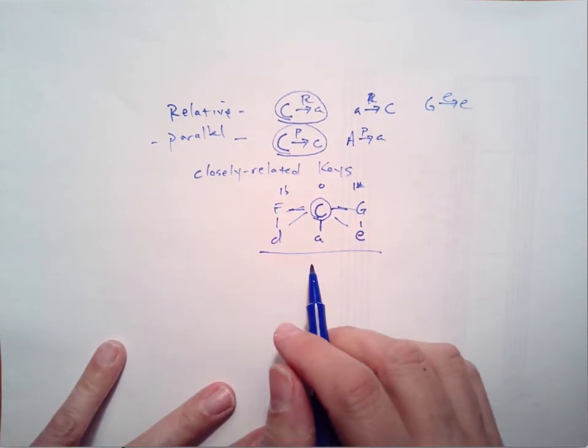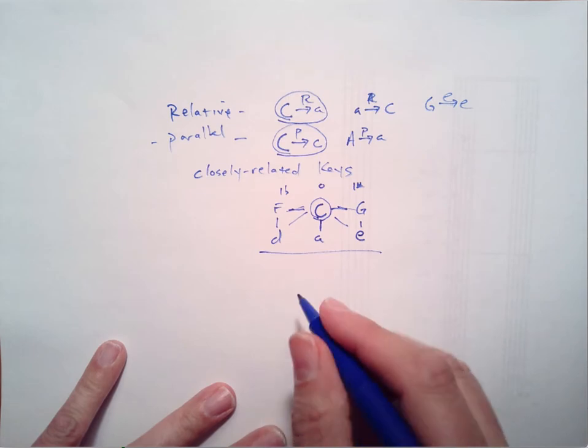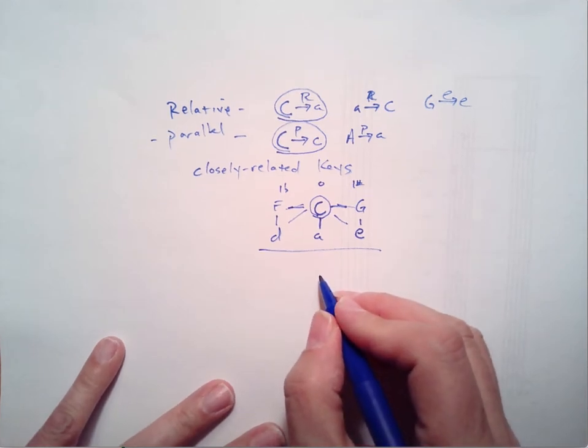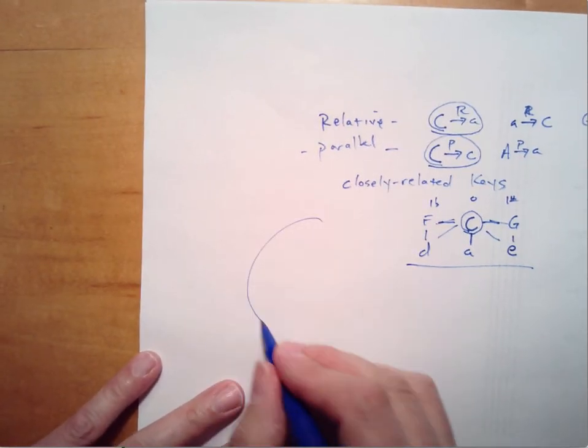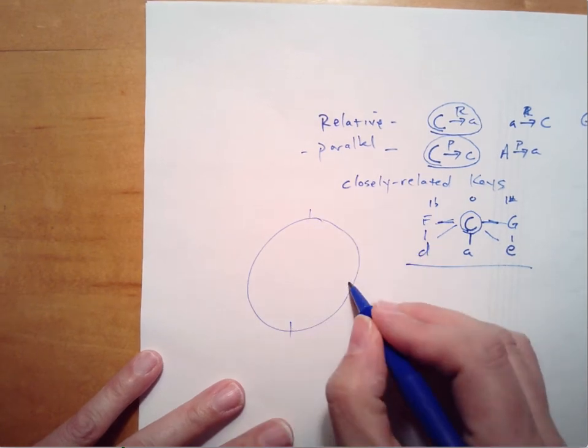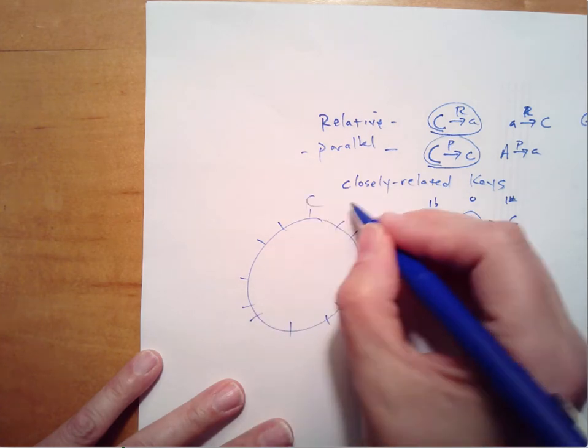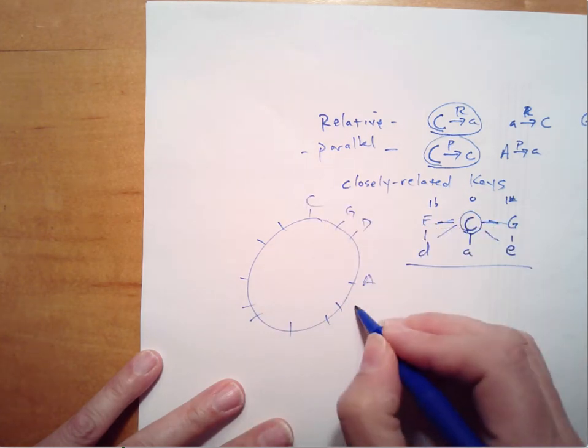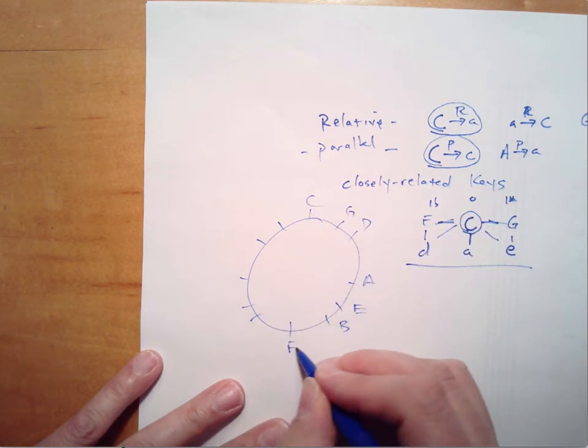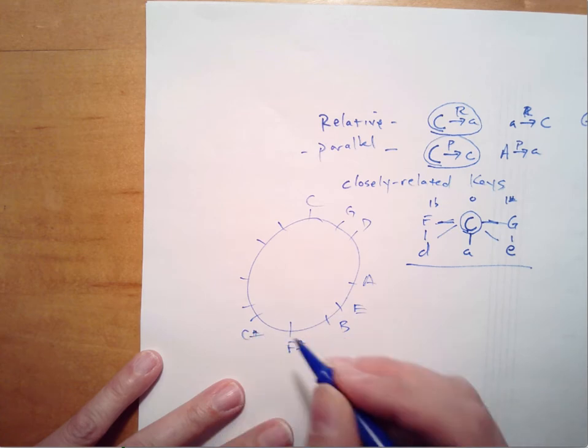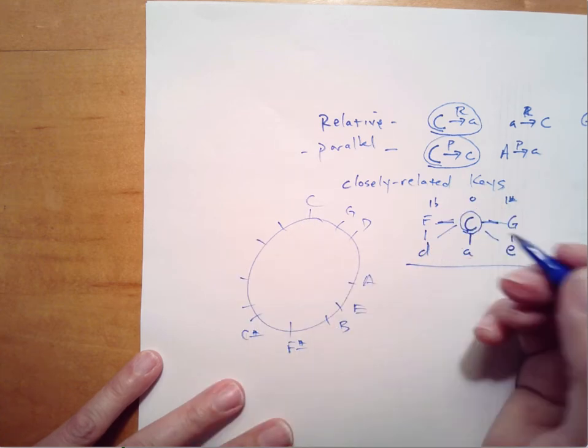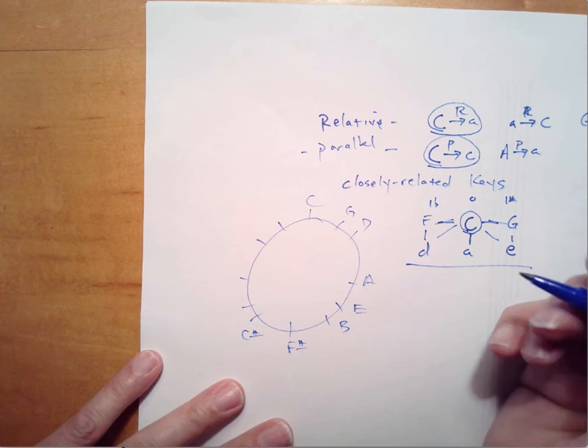Closely related keys can be seen very easily on the circle of fifths. C, G, D, A, E, B, F sharp, C sharp. I'm just going to go around the sharp side to save us some time.